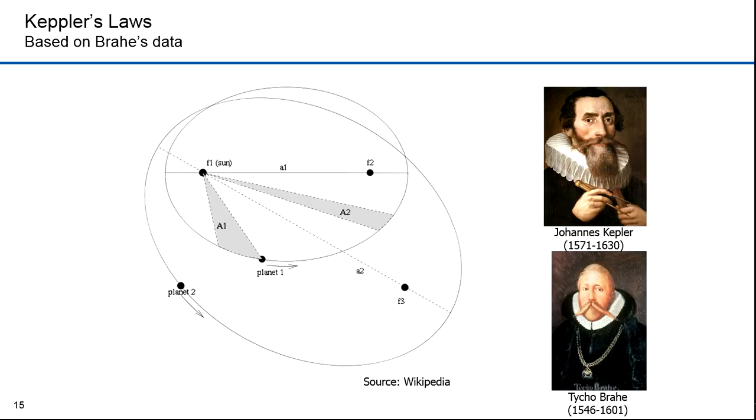Brahe died the following year because of complications from a burst bladder. At a banquet, he drank copious amounts of liquids and felt it would be rude to get up. Others believed that he may have been poisoned, and some suggest that it was Kepler. Regardless, after Tycho's death, Kepler stole his data before the Brahe family could secure it. Over the next 11 years, Kepler then developed his laws of planetary motion that resulted in predictions that were 1500 times better than Ptolemaic methods.